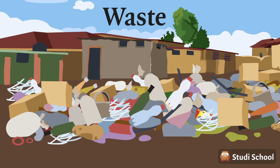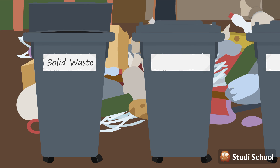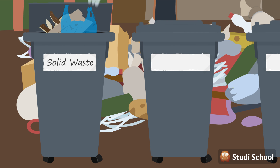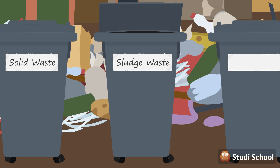Waste can be categorized into different types. There's solid waste, which includes vegetable peelings, bread wrappers, plastic bags, and other solid things. Then we get sludge waste, which is somewhere between solid waste and liquid waste. This would include human feces or chemicals that have been used in a hospital or factory.